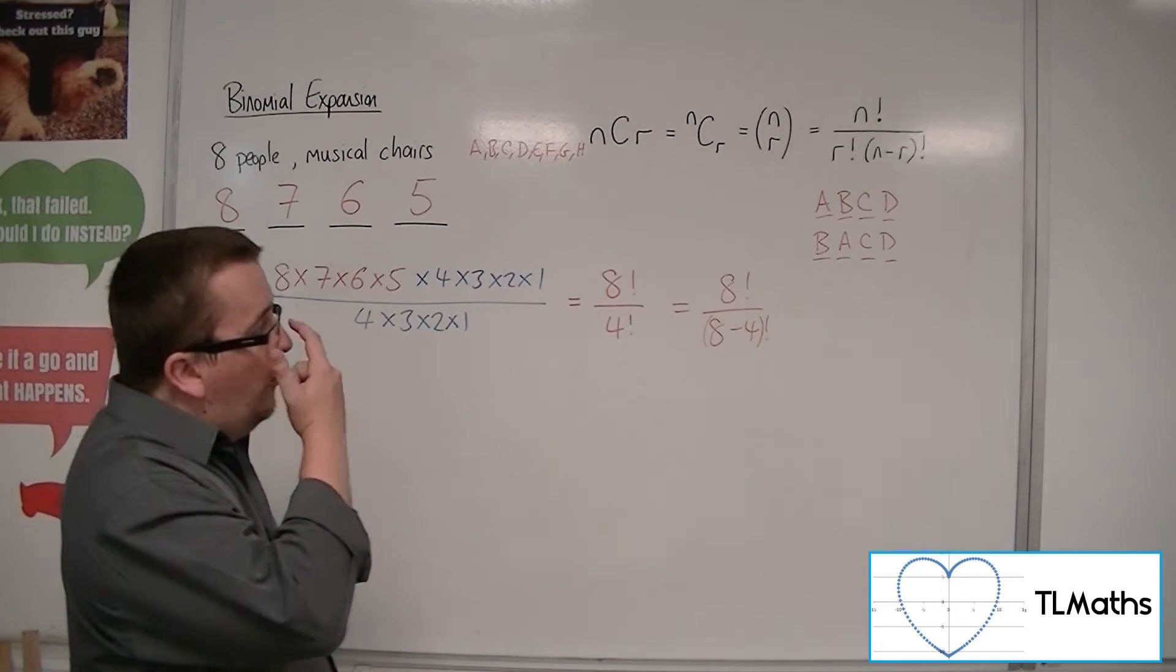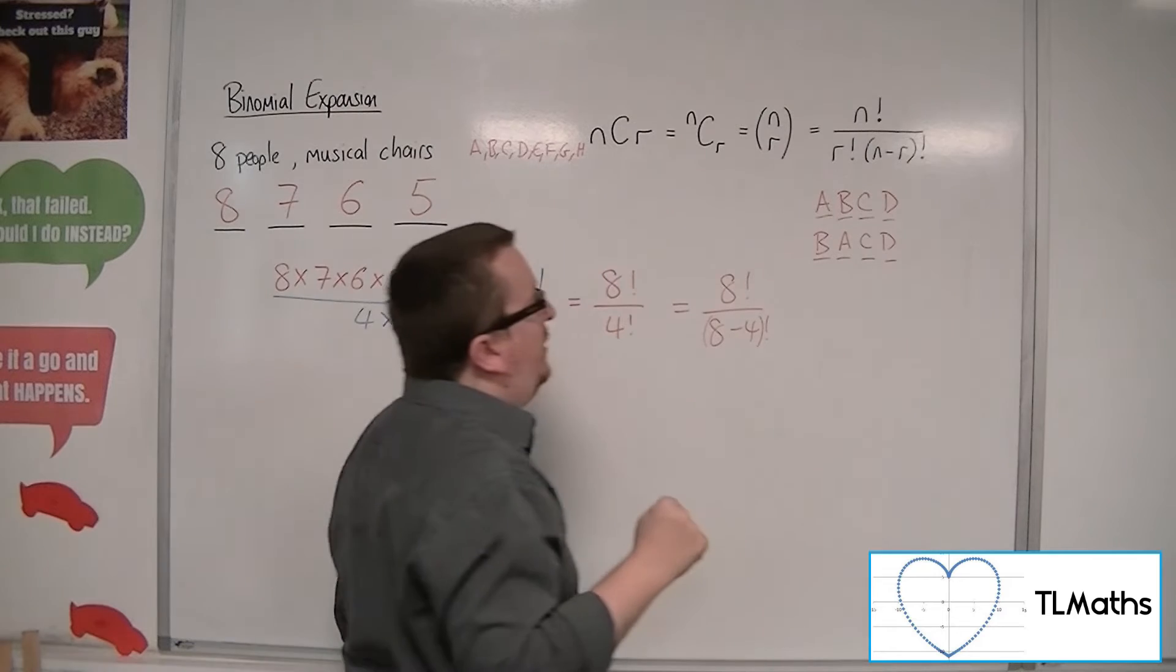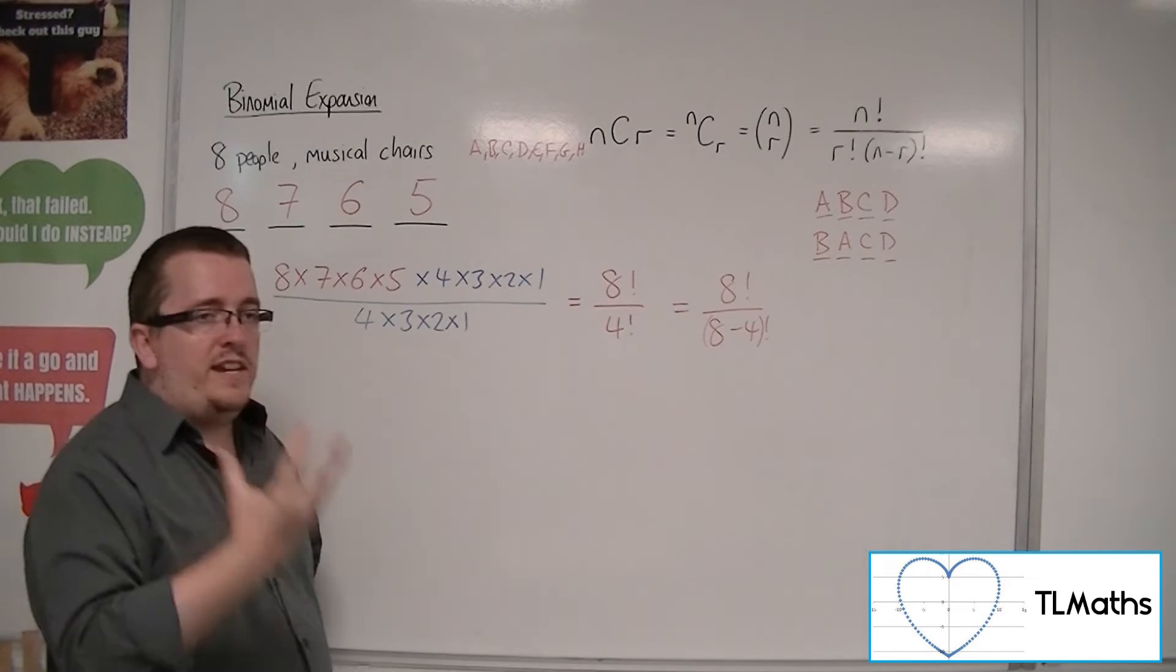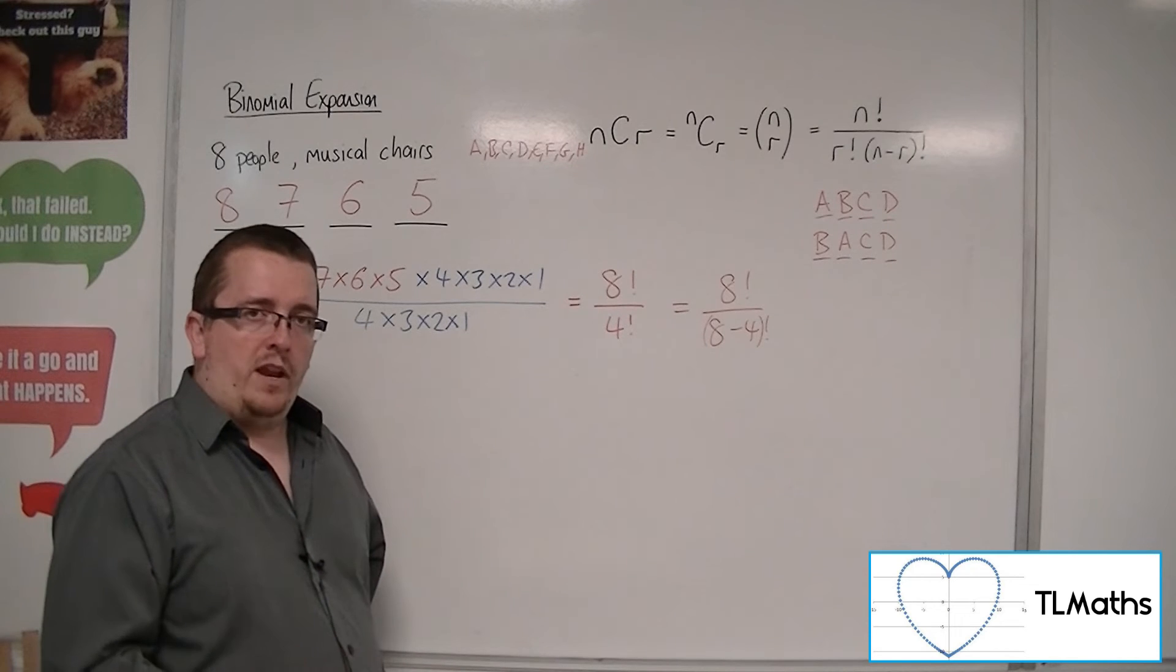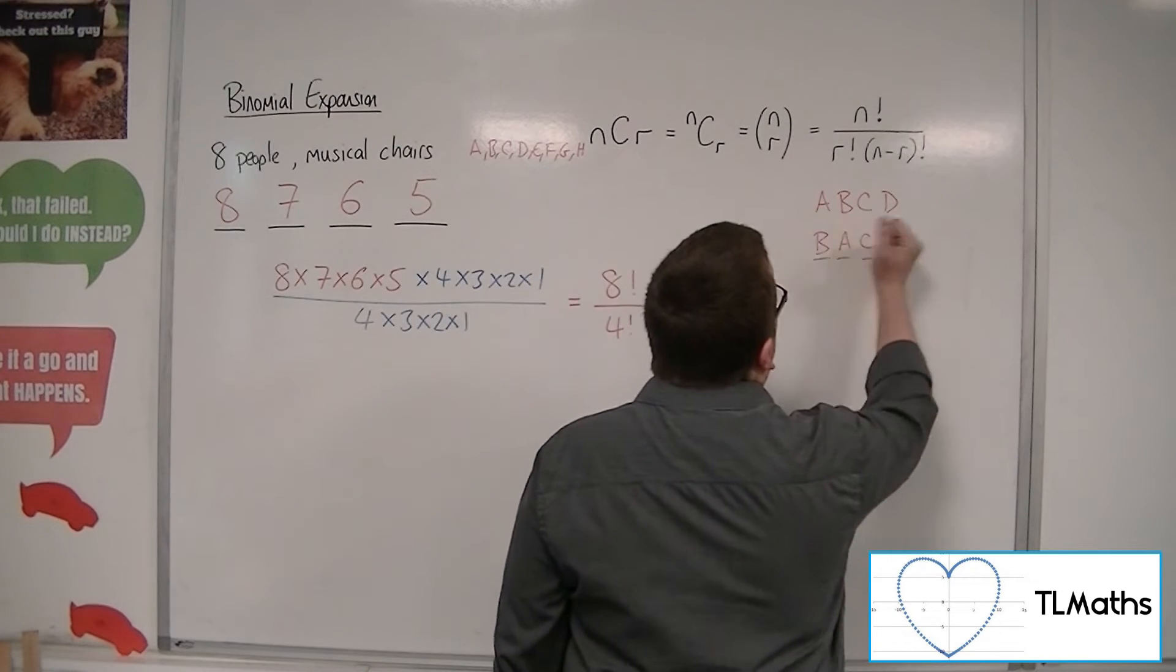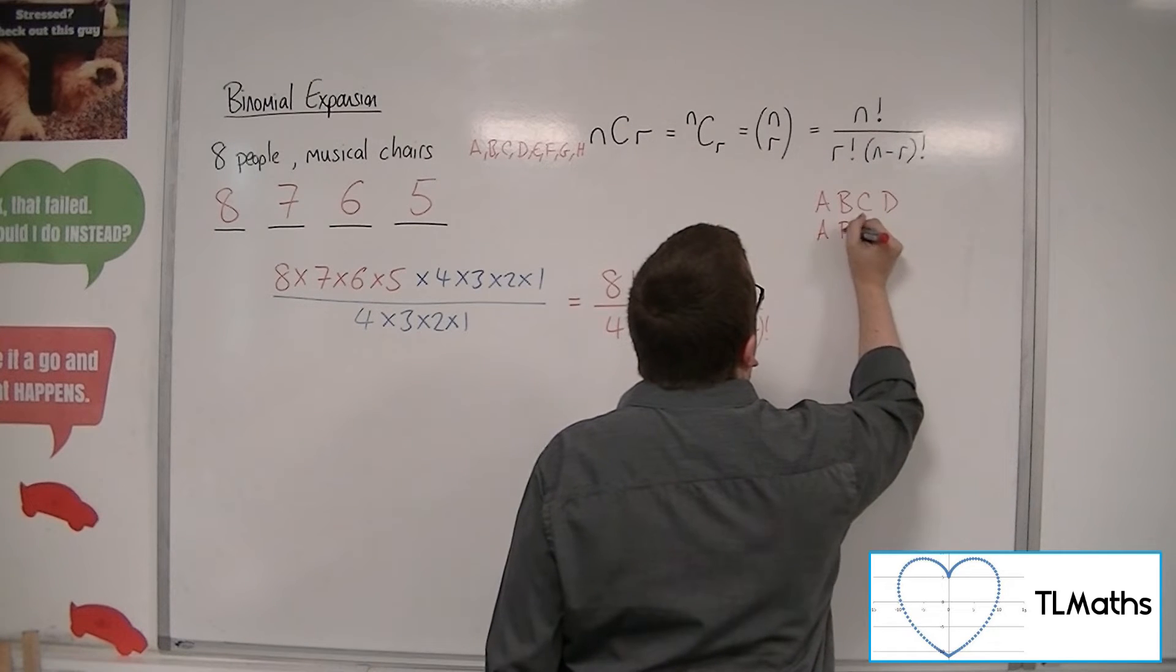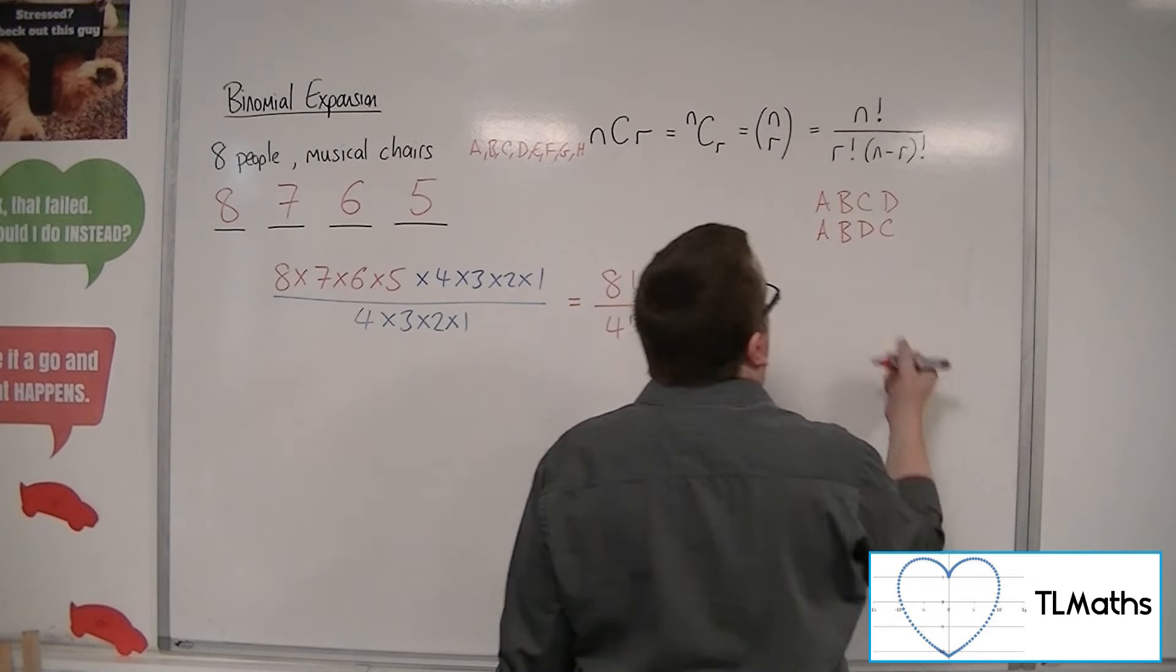So what I've got here is a case where actually, well, if A, B, C, D is the same as B, A, C, D, then how many different ones am I including that are equivalent? So A, B, C, D would be exactly the same as A, B, D, C, or A, C, B, D, or A, C, D, B.